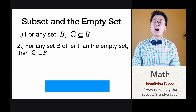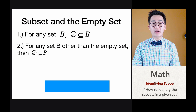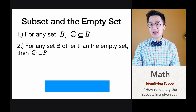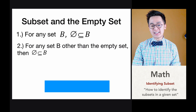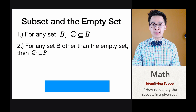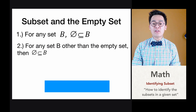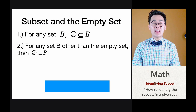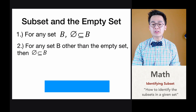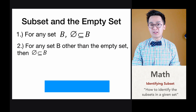Another property about subsets is that for any null set, a null set is always included as a subset of any set. So for any set B, a null set is a subset of B according to the definition. And for any set B other than the empty set, the null set is also a subset of B. Now how do we use the null set to count the number of distinct subsets in a given set?